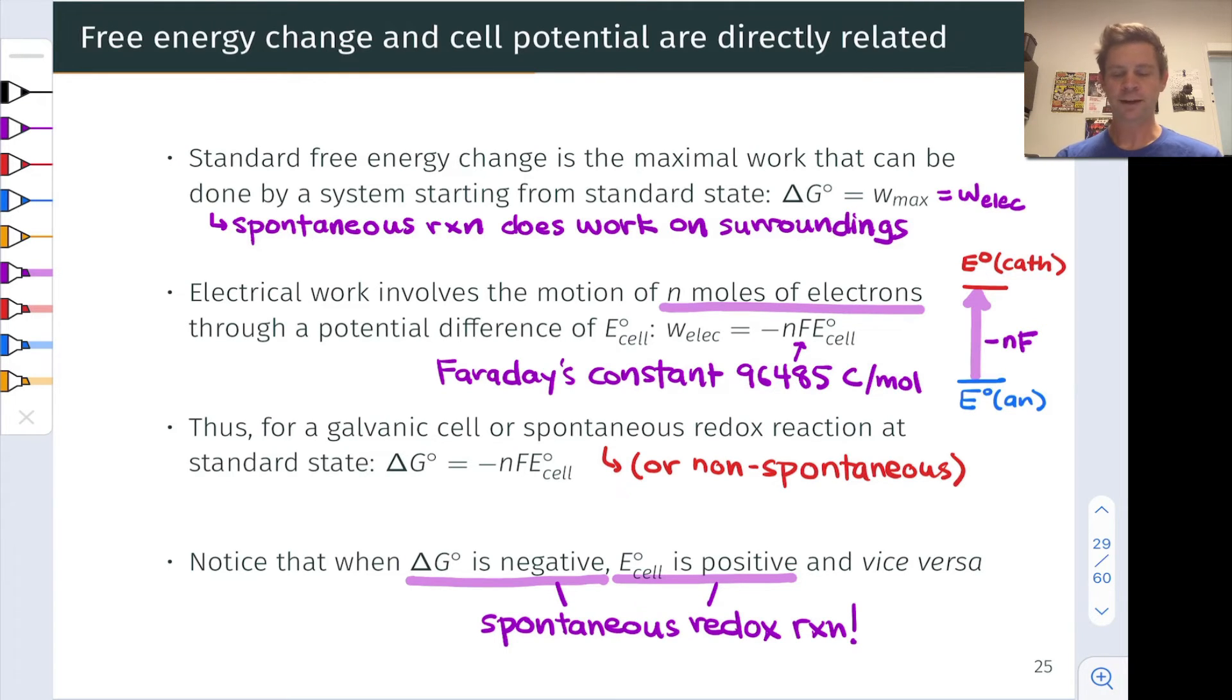This is nice. So now we can essentially use E°_cell as a stand-in for the free energy change ΔG°. Conceptually, the two are related. They're related just by a pretty simple scaling factor, the amount of charge transferred in one mole of the redox reaction, -nF, where n is that number of moles of electrons transferred.